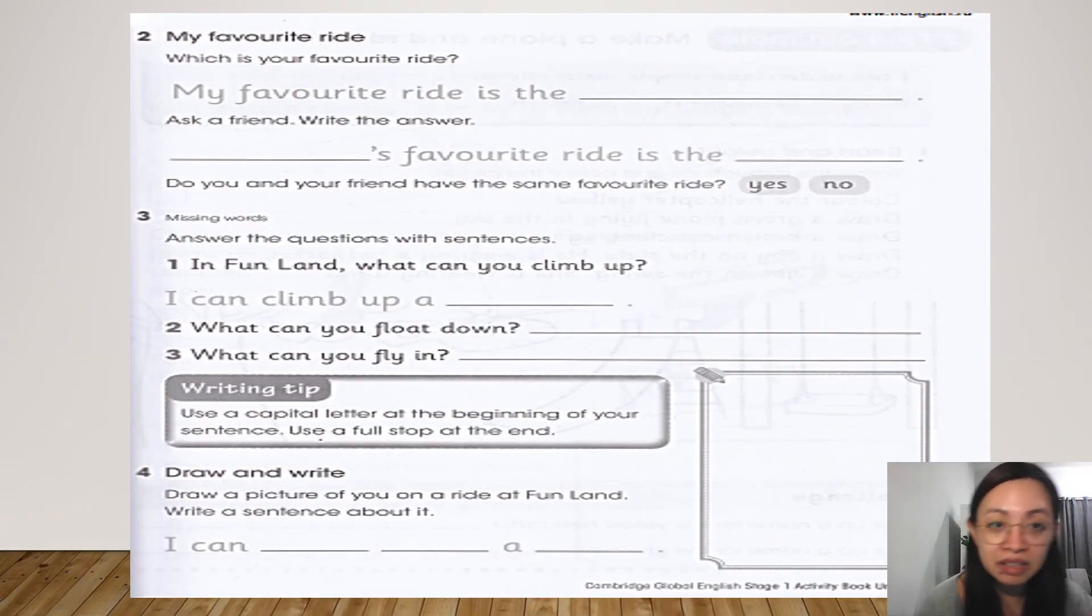Now, on your activity book, you will do this activity. Which is your favorite ride? My favorite ride is the, you have to choose from the book or from the worksheet or from the extra activity I gave you before. Ask a friend, write the answer. Since if you don't have your friend at home, you can ask some members of your family like your mom, your dad, your brother, or your sister. Blank favorite ride is the, and then try to compare your favorite ride. Do you and your friend have the same favorite ride? You have to circle yes or no.